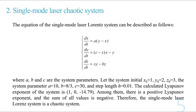Next is the single mode laser chaotic system. The equation of the single mode laser system can be described as follows. Among them, there is a positive component and the sum of all values is negative. Therefore, the single mode laser system is a chaotic system.